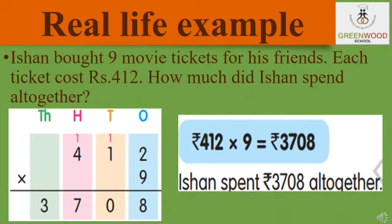Let's see a real life example. Ishan bought 9 movie tickets for his friends. Each ticket cost rupees 412. How much did Ishan spend altogether? Will he add 412 nine times? No, that is a very long method. He will multiply 412 with 9 — it is an easy method to find the answer. So let's see how multiplication is done.